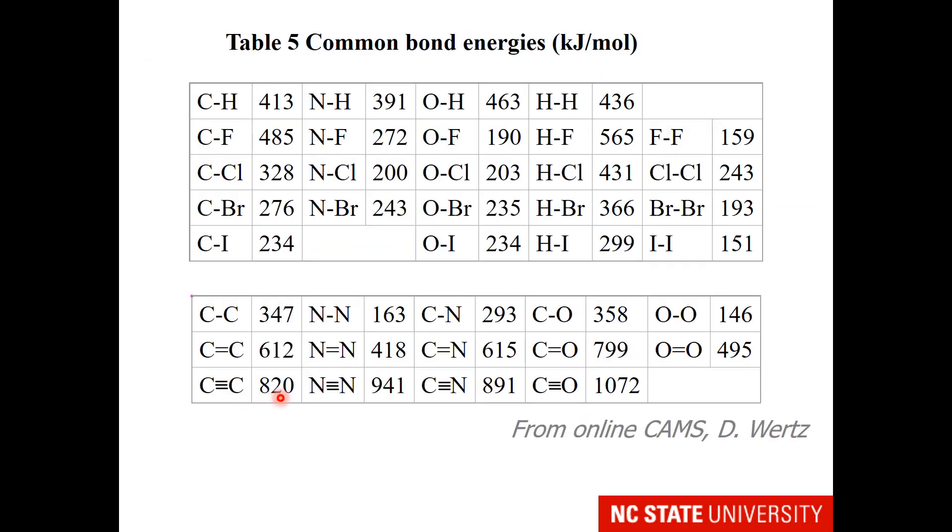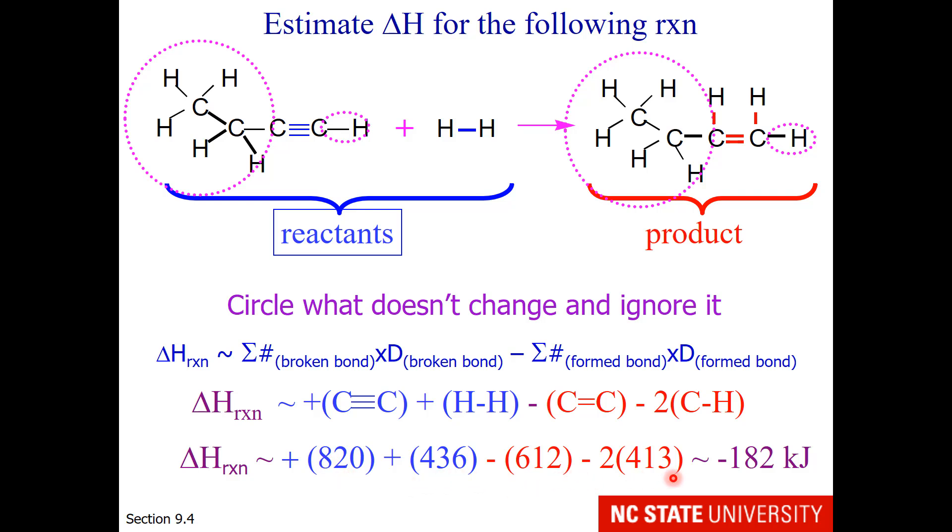So let's visit the table and get our values. We see that a carbon-carbon triple bond energy is 820, and a double bond is 612. Notice that the difference between these two is not 347. One cannot do this problem by just assuming they are breaking one carbon-carbon bond and using 347. Here is my hydrogen-hydrogen bond energy and my carbon-hydrogen bond energy. When I substitute these values and work the math, it turns out that this is an exothermic reaction at minus 182 kilojoules.